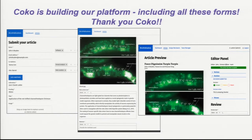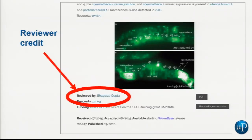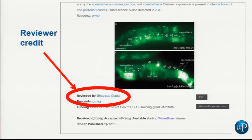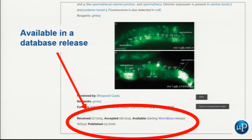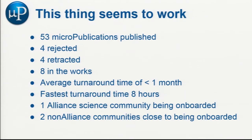Out of the submission form comes an article. The article is sent for peer review. Because there are going to be a lot more articles and they're really short and small, reviewers can be postdocs or senior graduate students — we're opening it up to a bigger pool. The reviewer gets credit if they want. Only a few reviewers have asked to be anonymous; for the most part, they're getting some kind of credit. The data goes into the database, gets integrated with like data, and you can find it. It's actually free advertising for journals and for us.